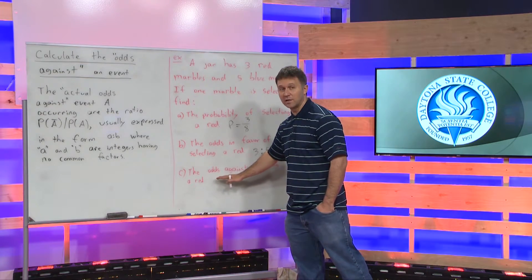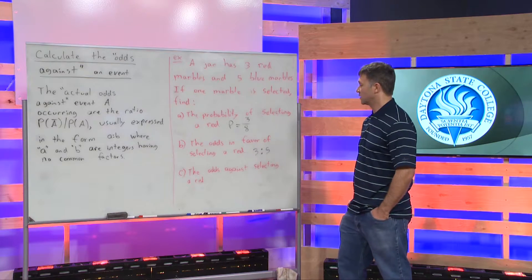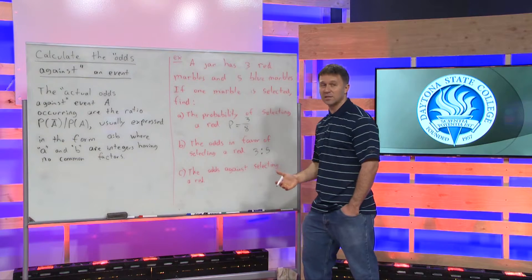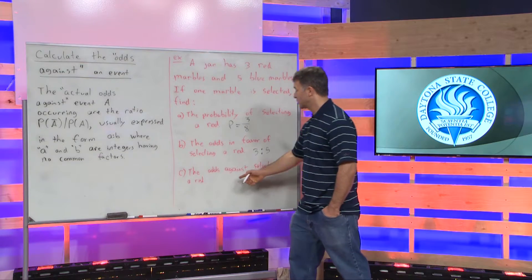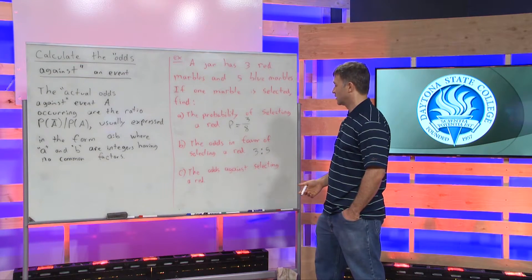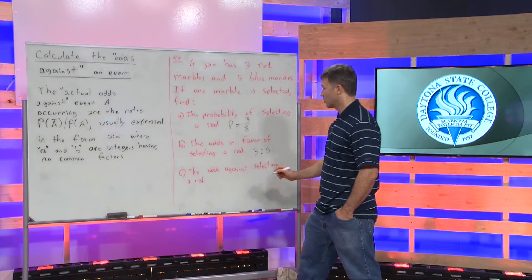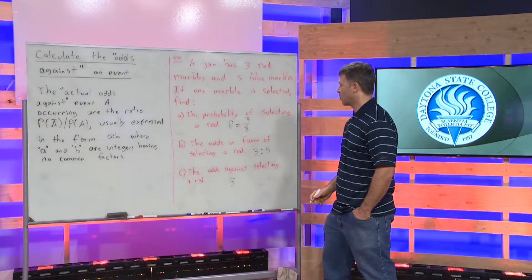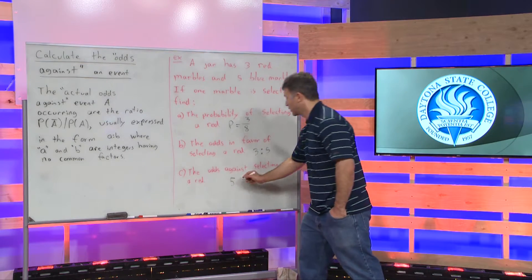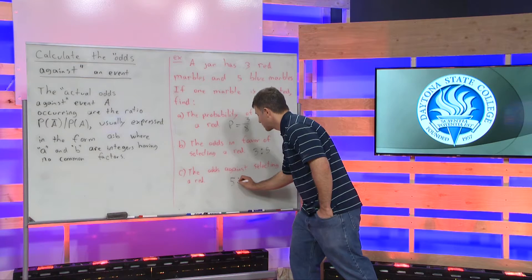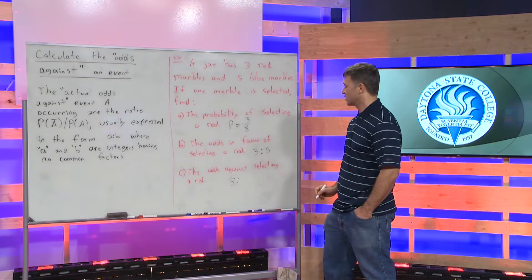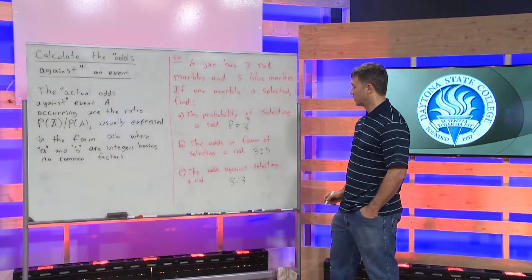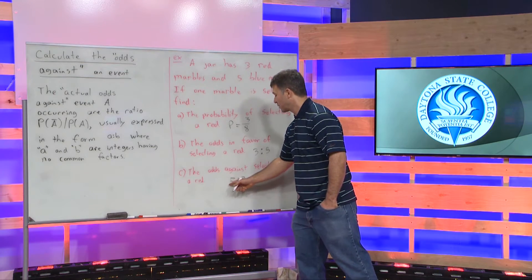Part c, the main idea of this video: find the odds against selecting a red. When talking about odds against, the first integer is not the number of ways we can select a red — it's going to be the number of ways we can select something that's not a red. The second integer will be the number of ways of selecting a red. So the odds against selecting a red are going to be five to three.